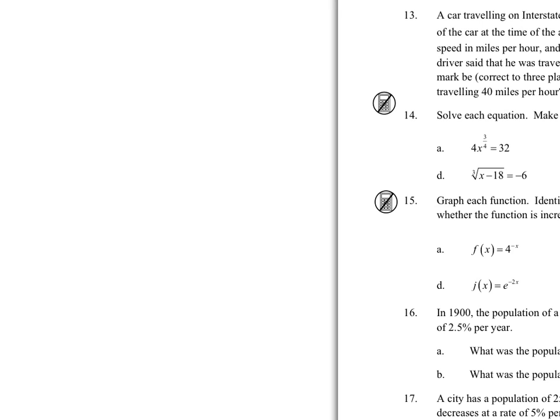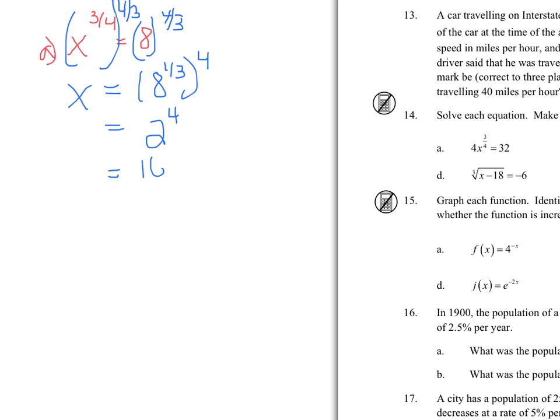Okay, so for A, we have to start by dividing both sides by 4. And now to eliminate the exponent, we're going to raise both sides to the reciprocal of the exponent, and that gives us 8 to the 1/3 to the 4th, which is 2 to the 4th, which is 16. So X equals 16 for A.